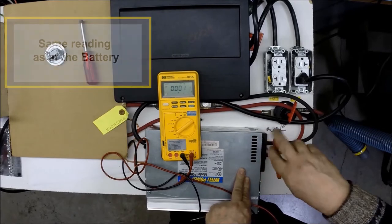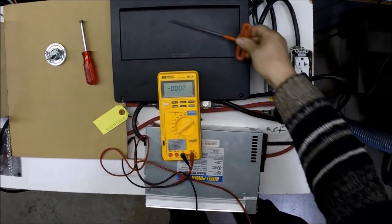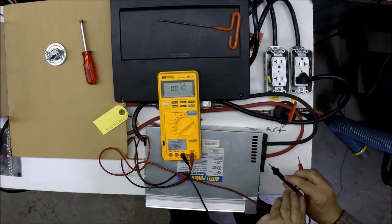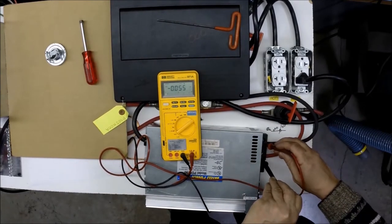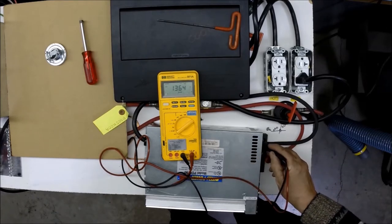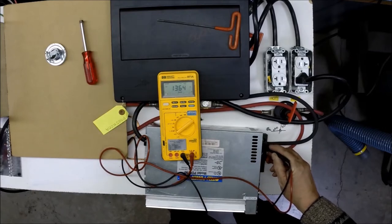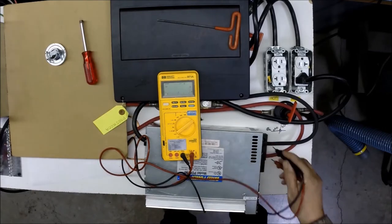You can now reconnect the negative lead, tightening it to the torque specification on the outside of the converter. And take your meter again and check to make sure the converter is working. Depending on the load on the converter and whether the battery is charging, the reading here could be 12.6 to 14.4.